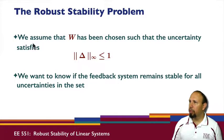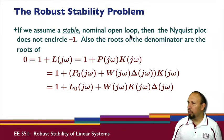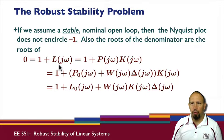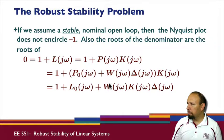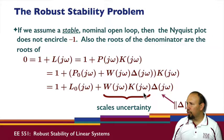In this robust stability problem, we assume that W has been chosen such that the uncertainty has infinity norm less than or equal to 1, and we want to know if the feedback system remains stable for all uncertainties in this set. If we assume a stable nominal open loop, then the Nyquist plot of 1 plus L0 does not encircle the minus one point. The roots of the denominator come from 1 plus L equal to 0, where L is 1 plus P times K. Here on the boundary s equals j-omega, 1 plus P·K becomes 1 plus L0 plus all of this stuff. This quantity basically scales the uncertainty W·K, and we know the uncertainty has infinity norm less than or equal to 1.